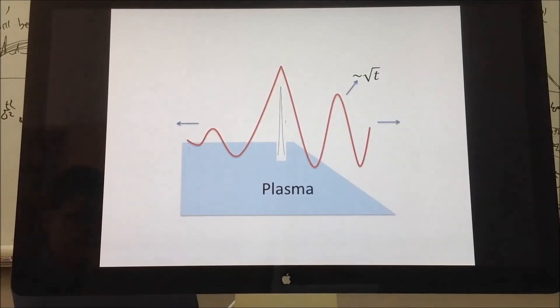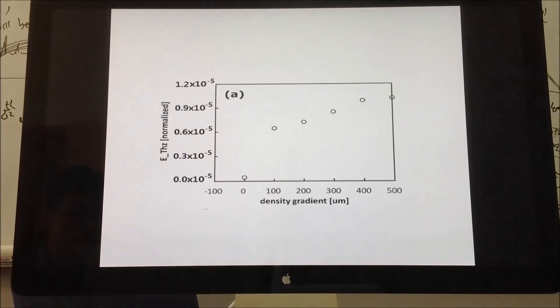By colliding counter pulses near the edge of the density gradient, we could accomplish growth of the field as well as the extraction of radiation into vacuum. The longer the gradient length is, the stronger the radiation amplitude is. This figure shows the simulation results of enhanced terahertz radiation amplitude as the gradient length increases.